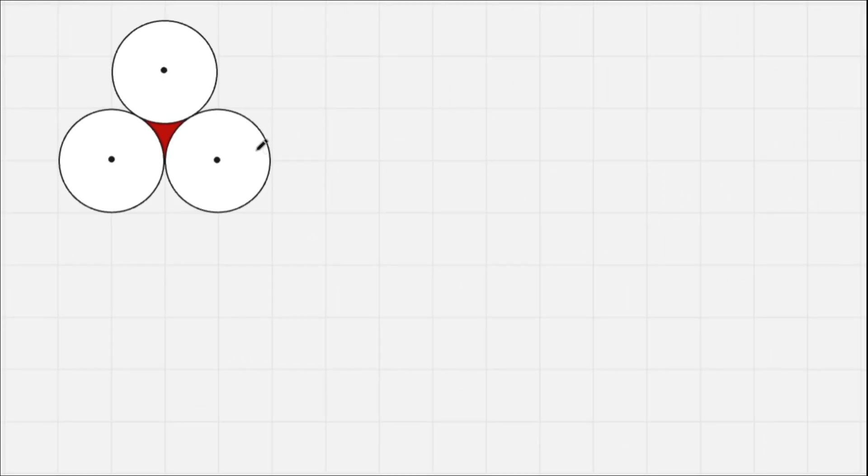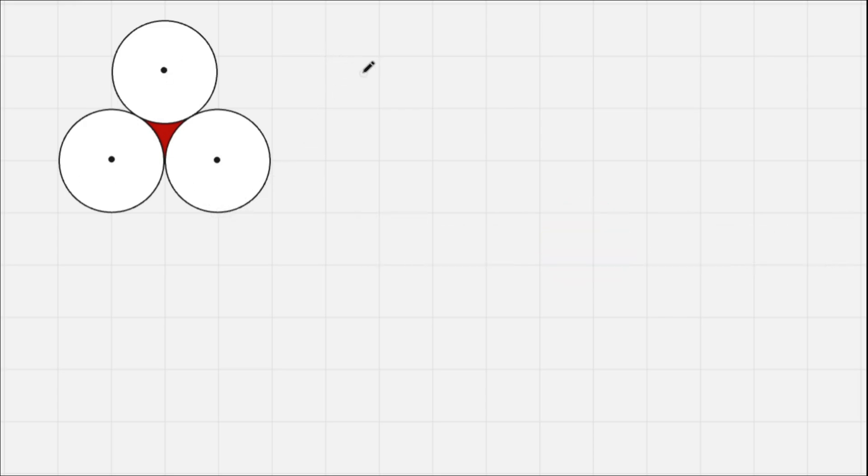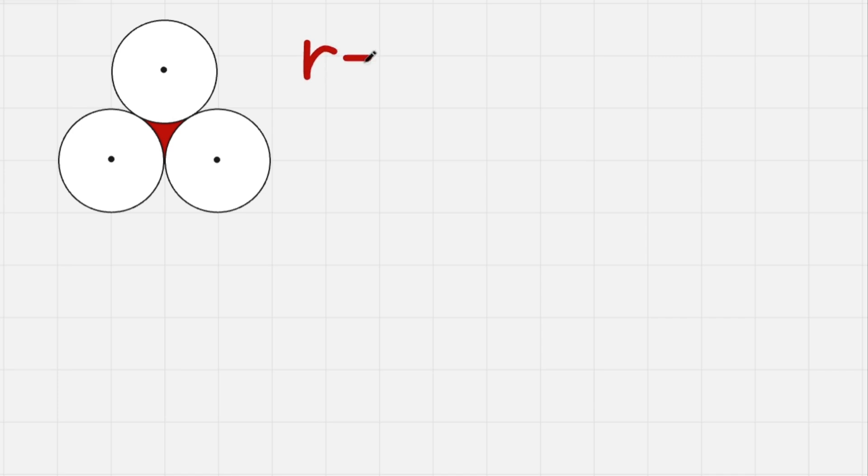Today we have this problem where we need to find this shaded area that is red. We have three circles, they are equal, and they have the radius of one. So we have radius equals one. We can also write it over here just to display. So our goal is to find this area.